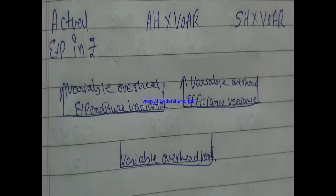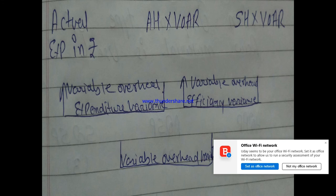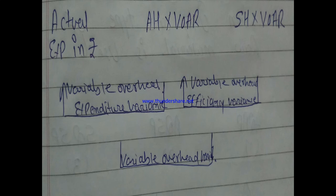We will study a table for solving the practical problem, preparing three columns. Column one indicates actual expenses in rupees. Column two indicates actual hours multiplied by VOAR (variable overhead absorption rate). Column three indicates standard hours multiplied by VOAR. The difference between column three and column two is variable overhead efficiency variance, and the difference between column two and column one is variable overhead expenditure variance.